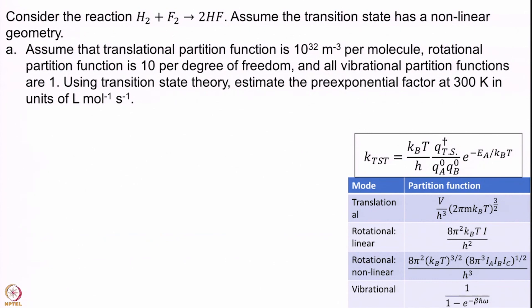We are going to look at the reaction of H2 plus F2 going to 2HF, and let us assume that the transition state is non-linear. The first part assumes the translational partition function is given as 10^32 meter^-3 per molecule, rotational partition function is 10 per degree of freedom, and all other vibrational and electronic partition functions are 1. Use TST to estimate the pre-exponential factor at 300 Kelvin in units of liter mole^-1 second^-1. I really want you to pause this video now and solve this problem on your own.